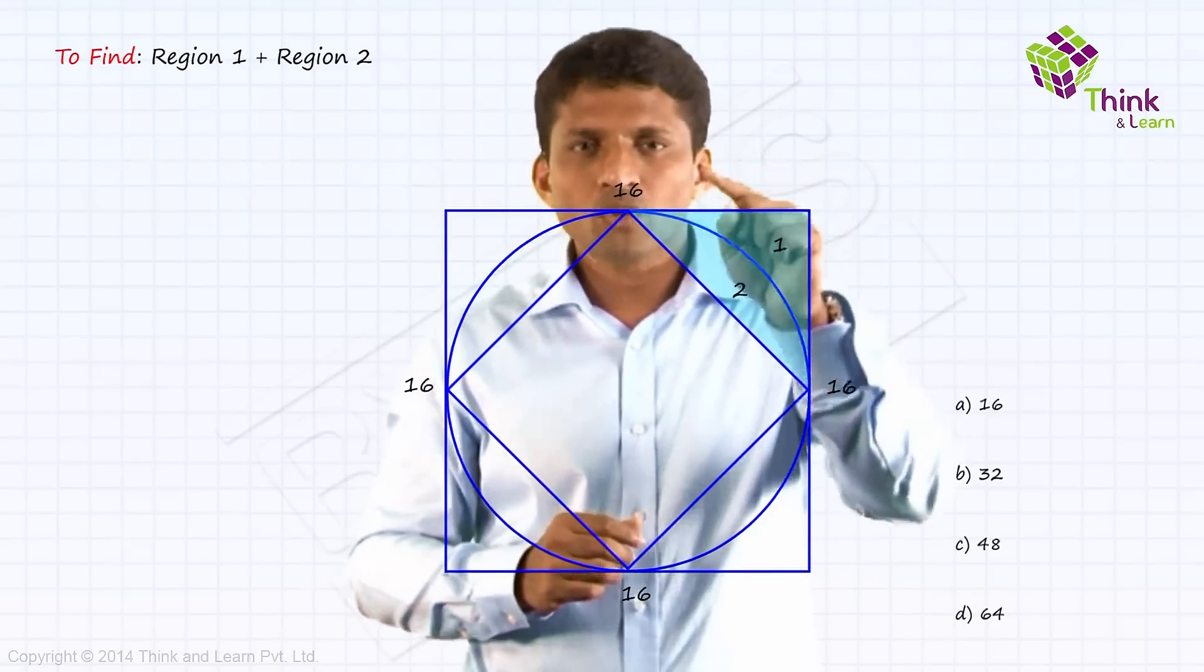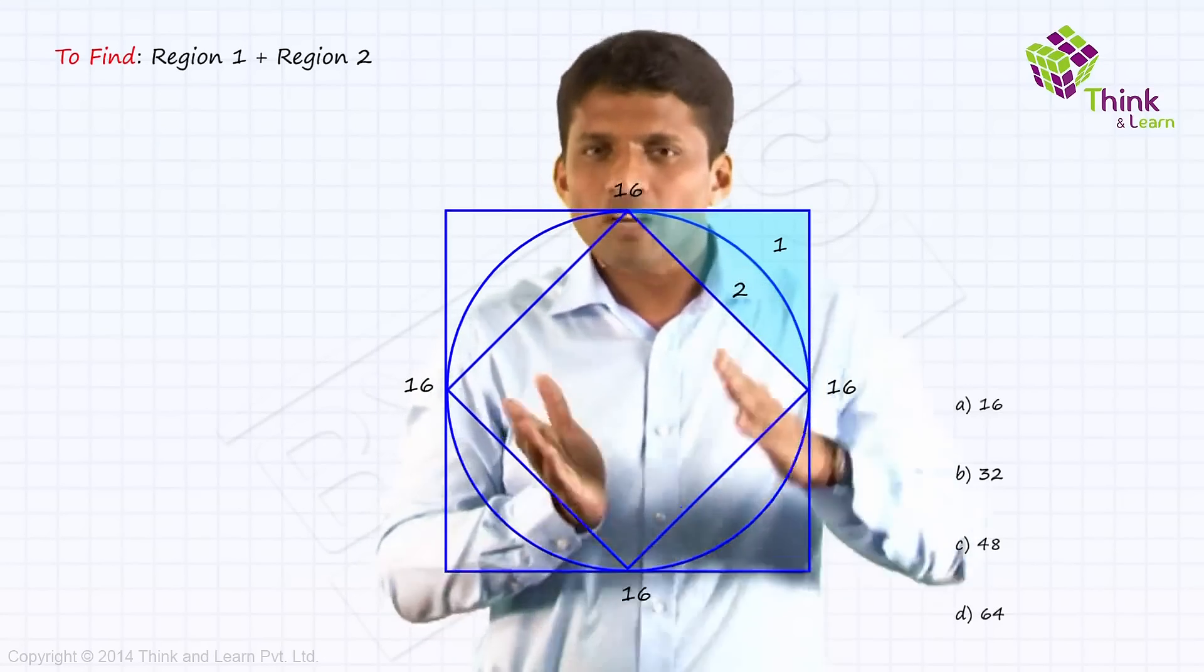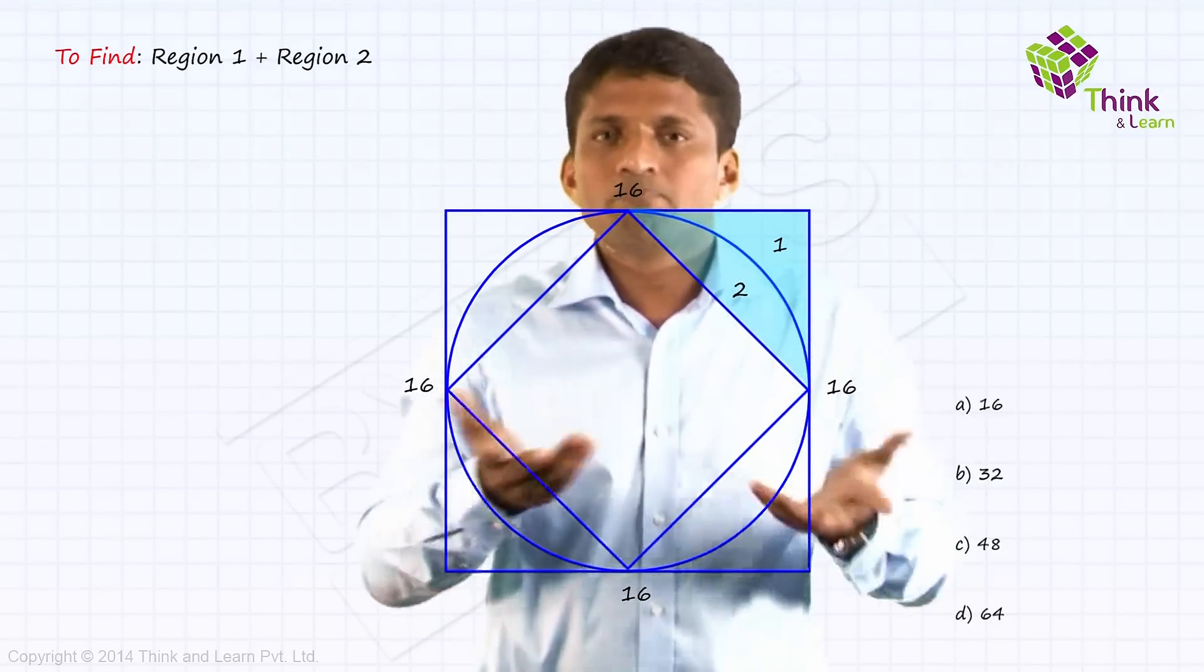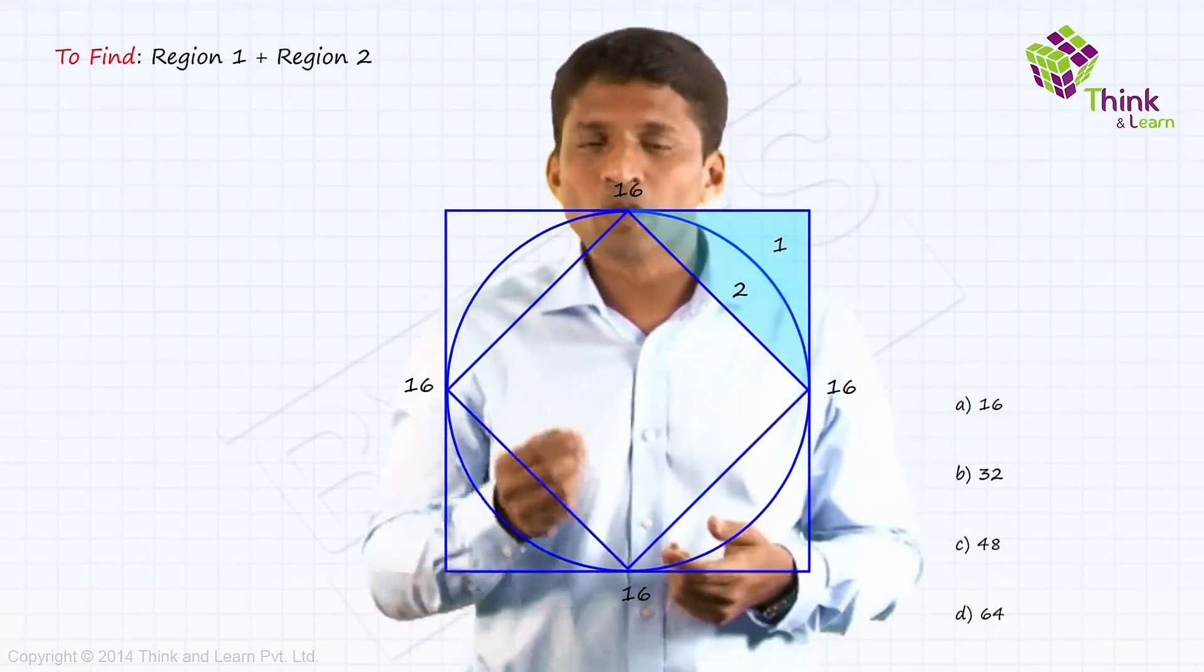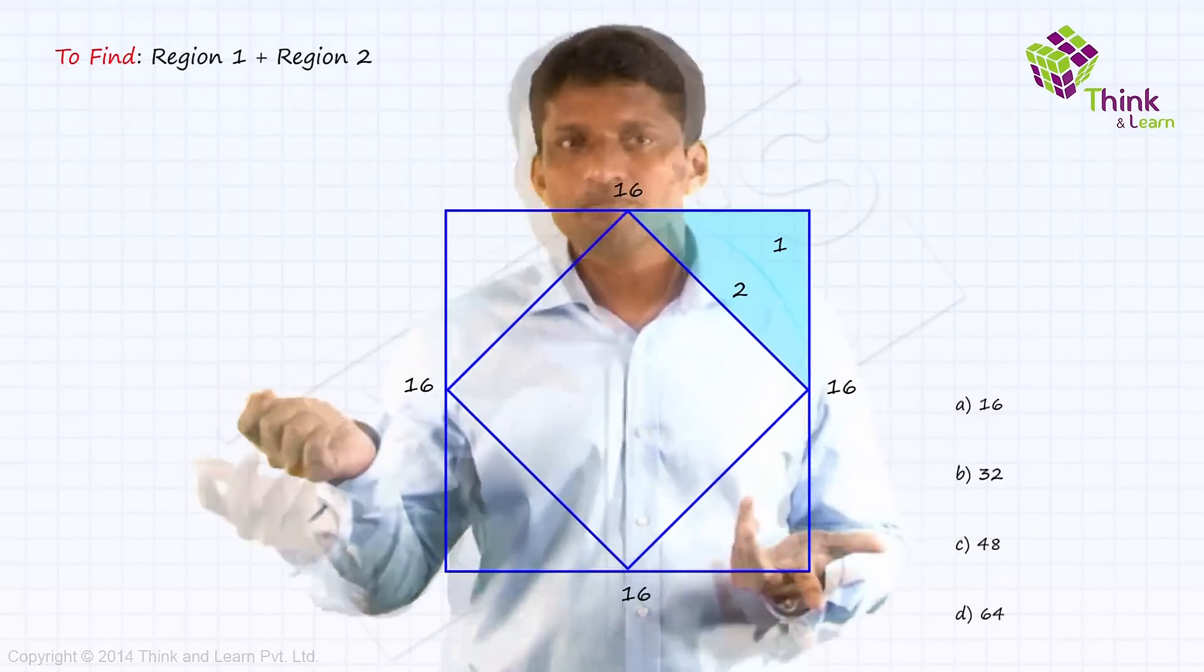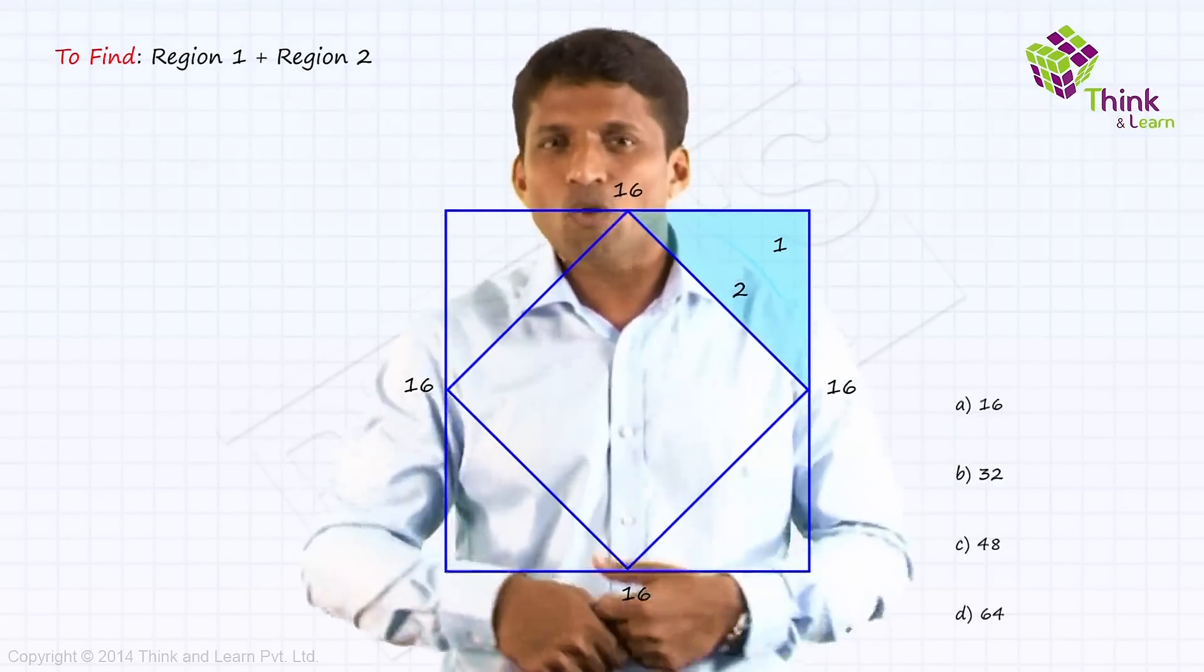You get region 1 here. You get region 2 here. Now they are together. So now it's an advantage because circle is out. So π is out of calculation.